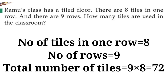The number of tiles in one row is eight. The number of rows is nine. So the total number of tiles is nine times eight, which is equal to 72.